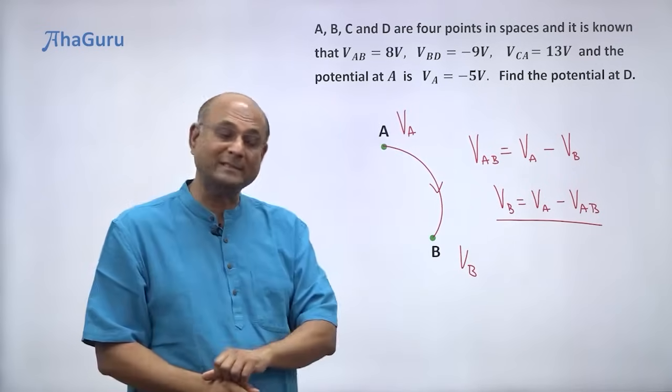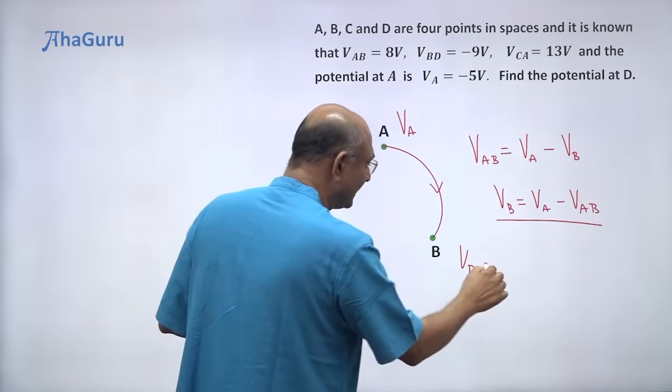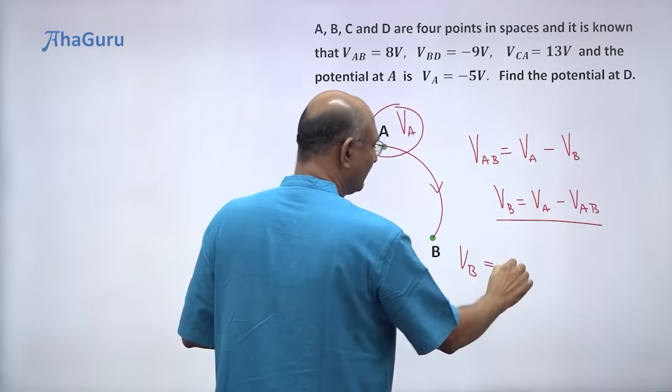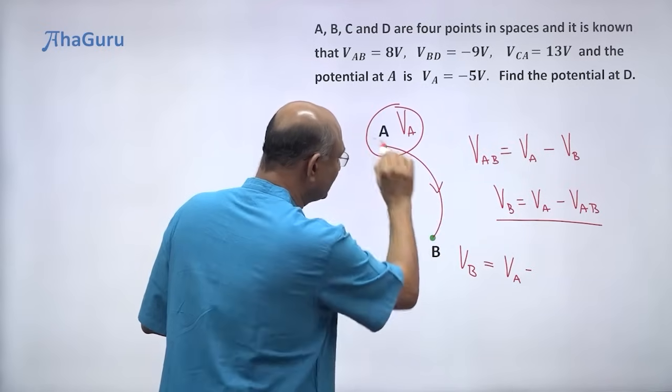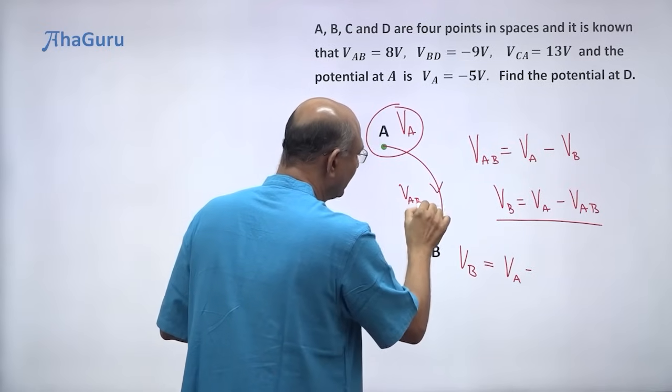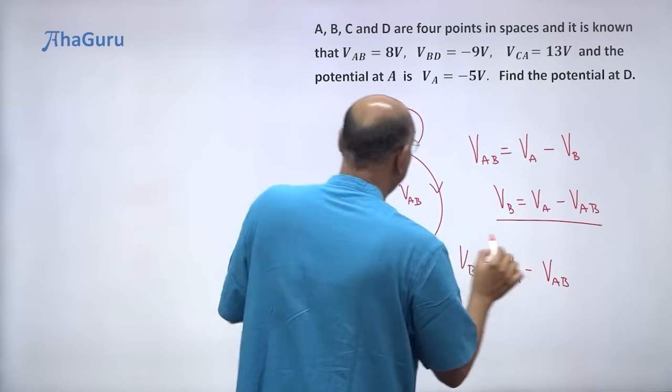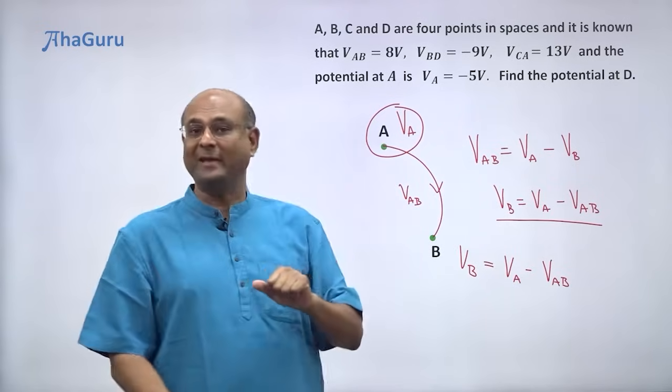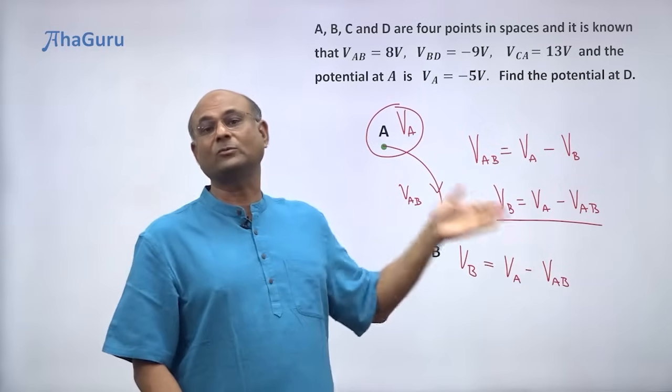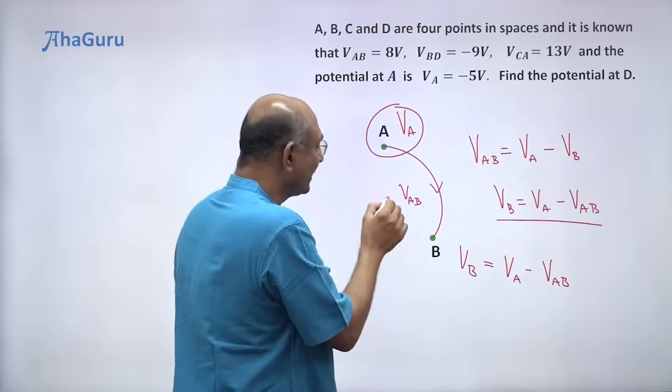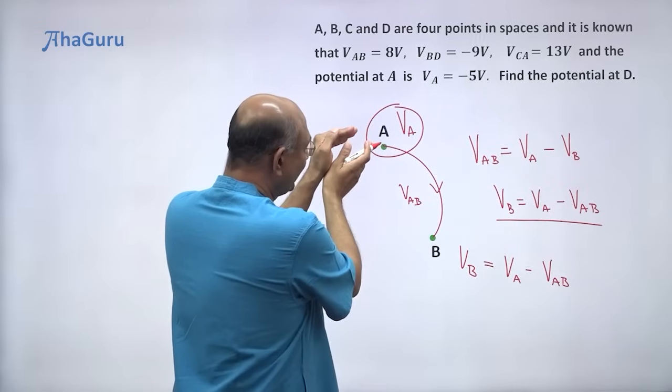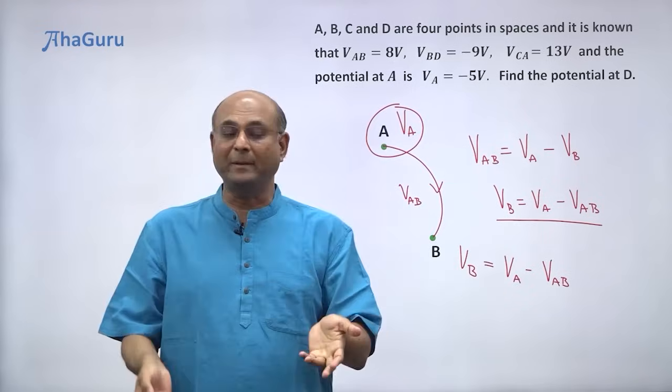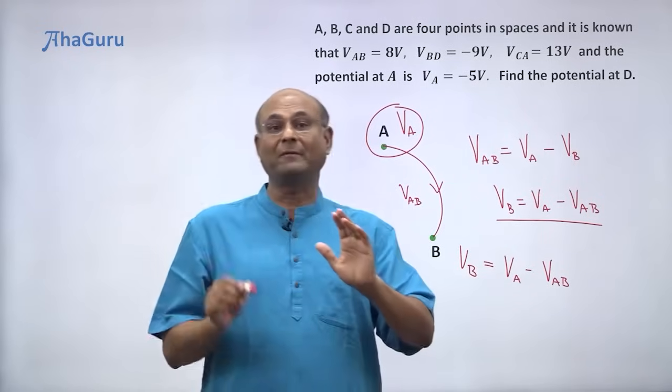But let us think about what is this saying. It is saying that the potential at B is equal to the starting potential V_A minus the potential drop V_AB. So you start at A with some value and you are dropping by V_AB. So basically you are subtracting V_AB. That's what will lead you to V_B. So what is V_B? Starting potential minus the drop. So V_B is V_A minus V_AB. Turns out to be very useful when we are solving problems.